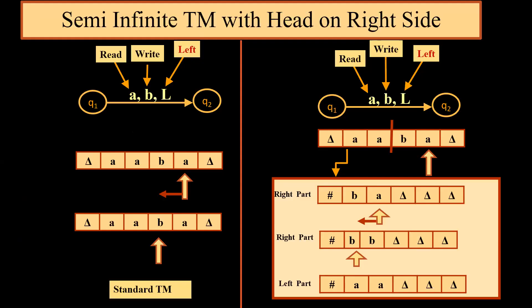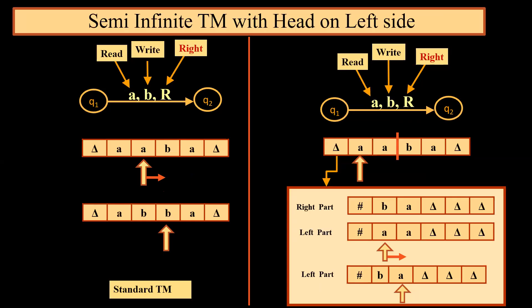When we talk about semi-infinite Turing machine and we say that there is a movement on the right side, which is depicted on the right side of this particular slide, it will read a symbol from the right part and it will move one step left. If we talk about semi-infinite tape with head on left side, that means we are considering A, B, R as read A, write B, and move towards right in the left part. Right part remains intact. It does not change.